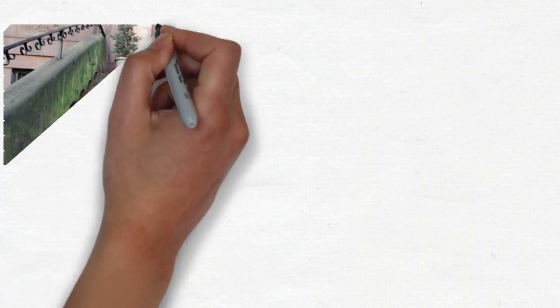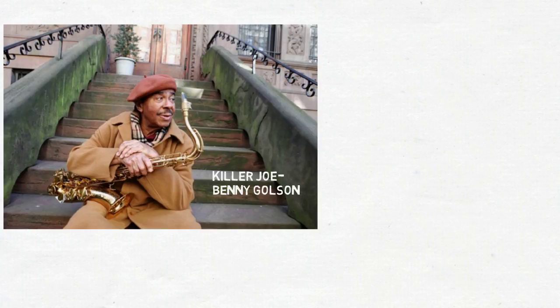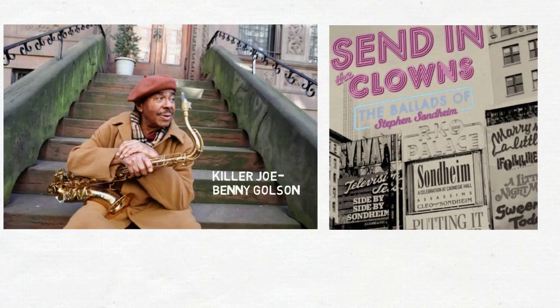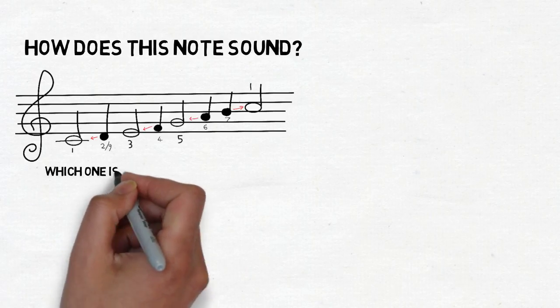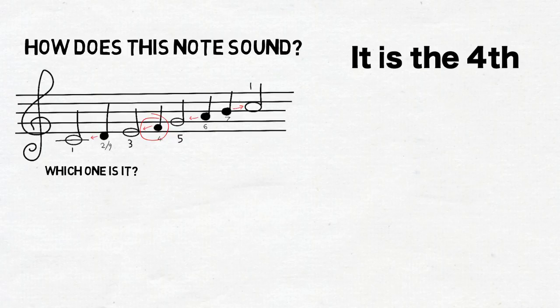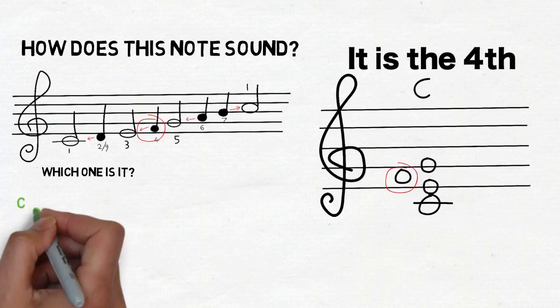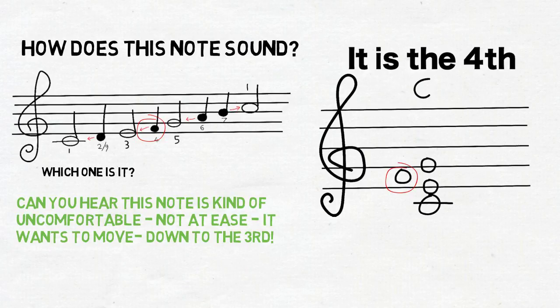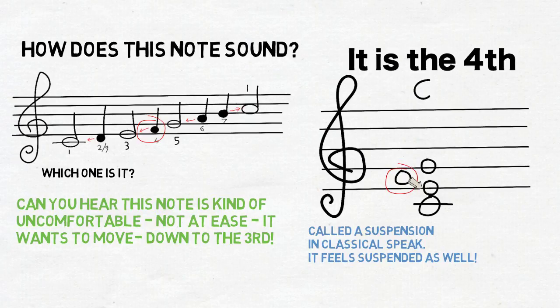Okay, let's move on. Can you identify what degree of the scale these two tunes start on? Any ideas? Let's listen to that in C. Well, you can hear, as I mentioned before, that the fourth wants to go to the third. But can you hear? It's quite a strong sound. It's like it's not quite happy there. Angular sound. In classical speak, it's called a suspension. Then it feels at ease when it resolves.